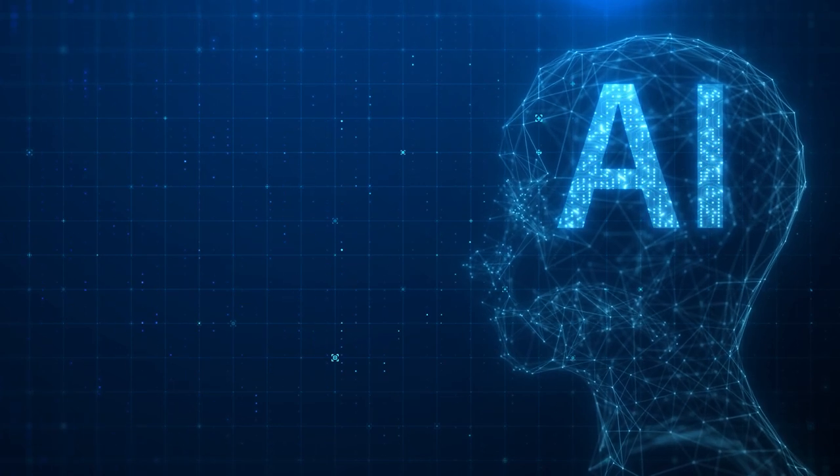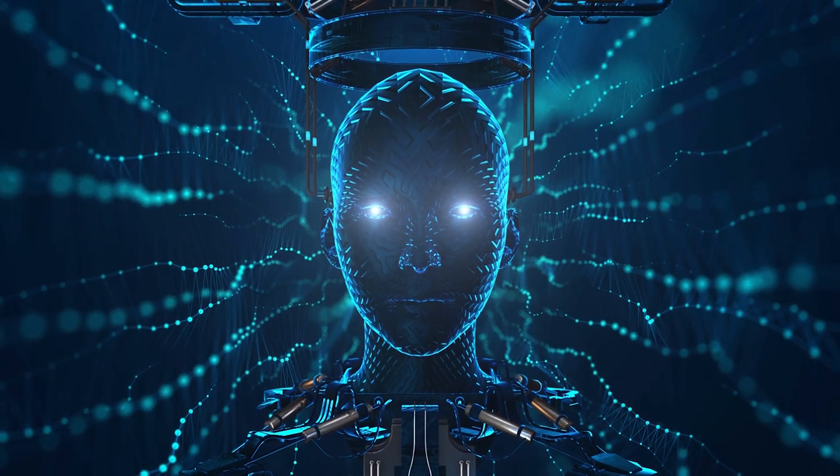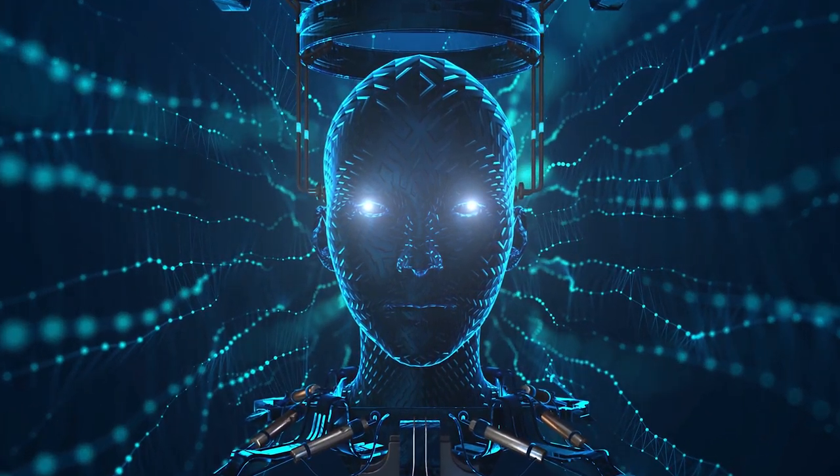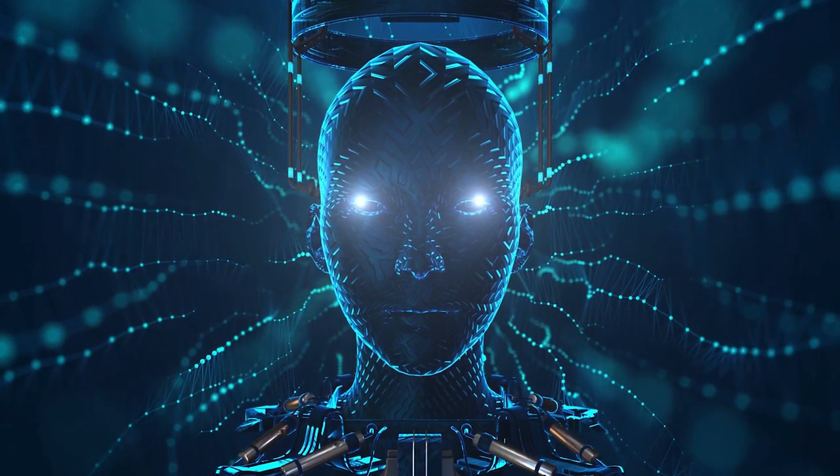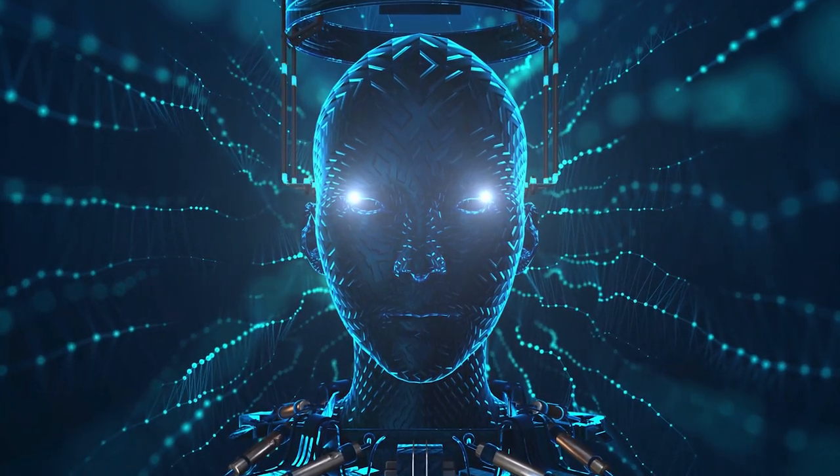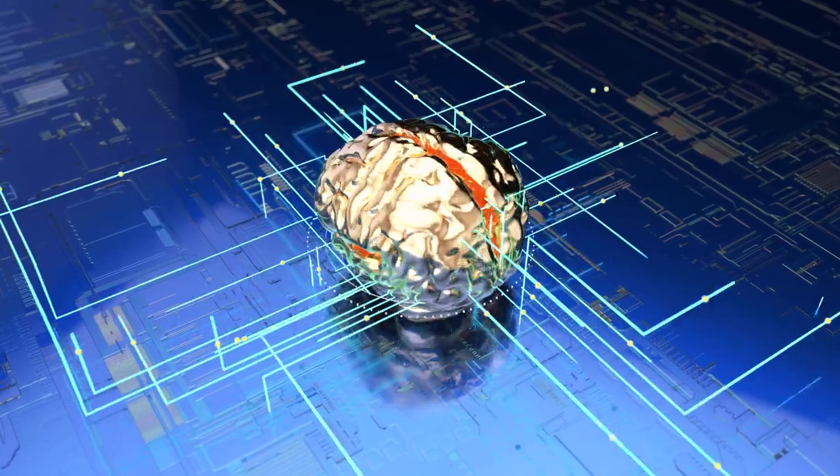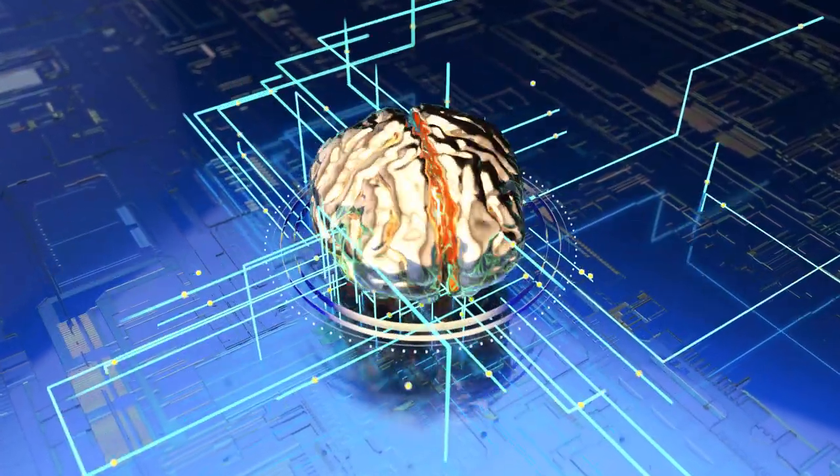Harari talks about the rarity of intelligent life in the universe and the tension between intelligence and happiness. He highlights the distinction between intelligence and consciousness, arguing that consciousness is far more valuable than intelligence. He also explores the possibility of intelligence existing without consciousness and vice versa.